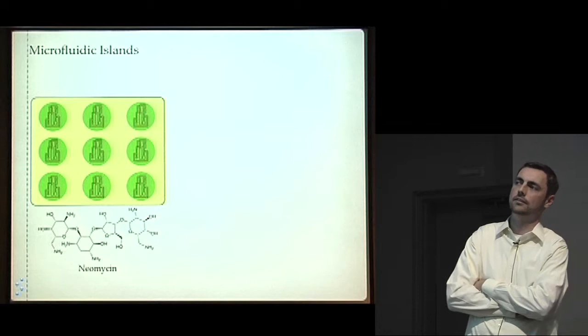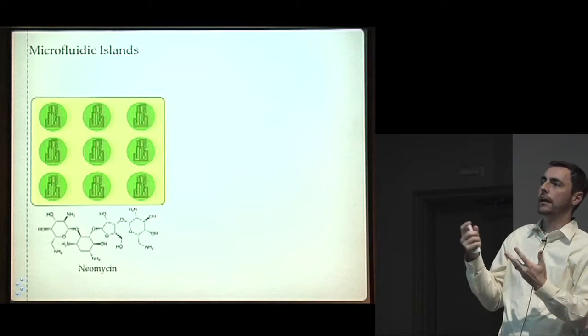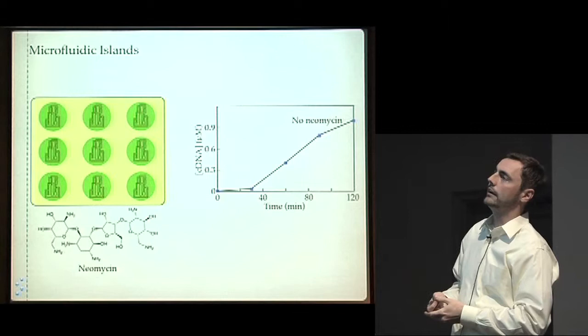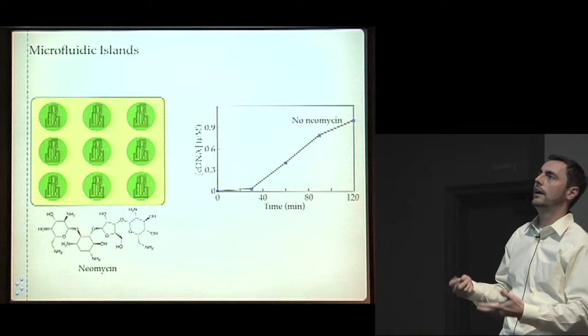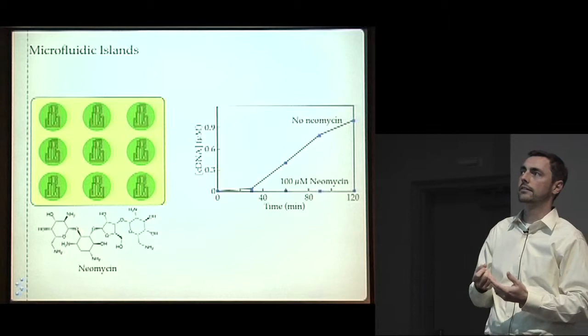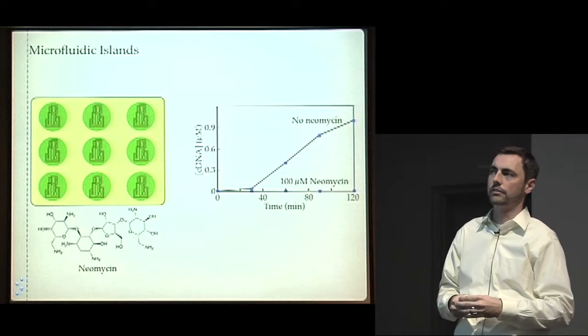And we were looking for molecules that would be resistant to this antibiotic. And to give you an idea for what this antibiotic does, we actually measured growth of our parent molecule. This is the molecule, a Superman molecule, that came out of the chip that I just described, which had gone through 500 logs of selective growth. And no neomycin, our molecule is a champ and grows wonderfully over two hours. But with 100 micromolar neomycin, it's totally flatlined. It is completely incompetent at amplifying in the presence of this antibiotic.